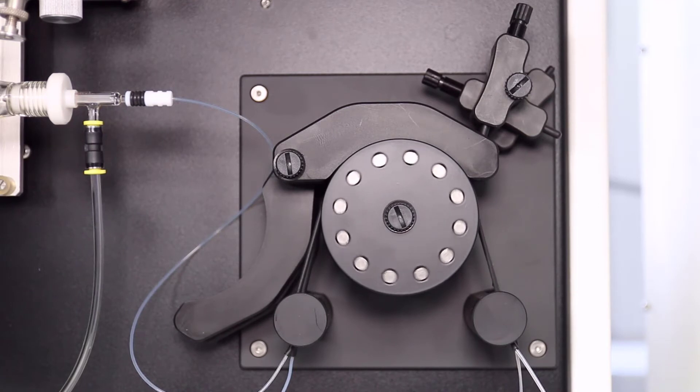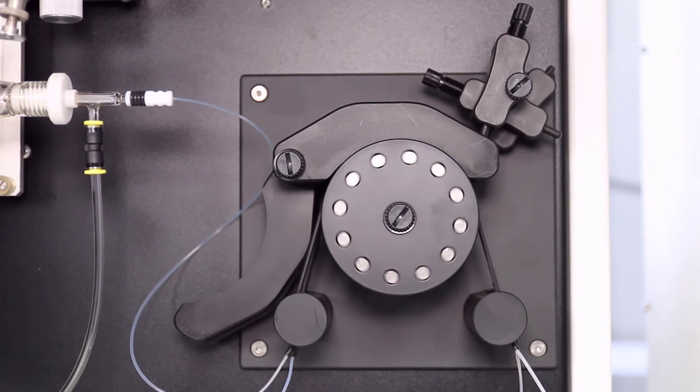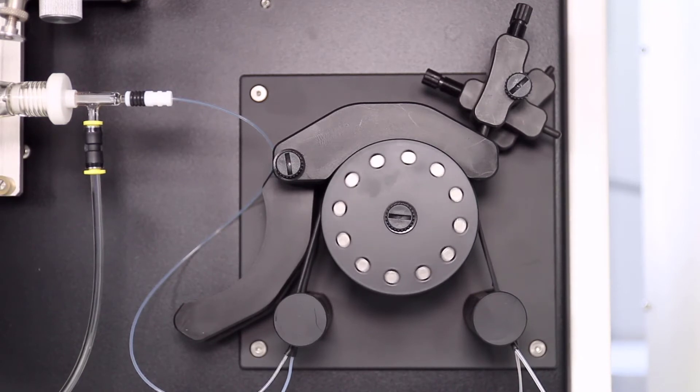The PlasmaQuant 9100 uses a 12-roller peristaltic pump with 4 channels for sample aspiration. The 4 channels allow for online dilution of the sample and automated introduction of the internal standard. Appropriate sample tubing will be provided in the enclosed organic sample introduction kit of the PQ 9100.